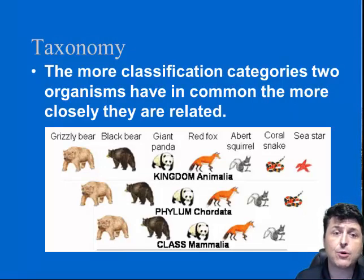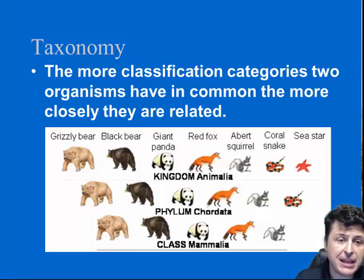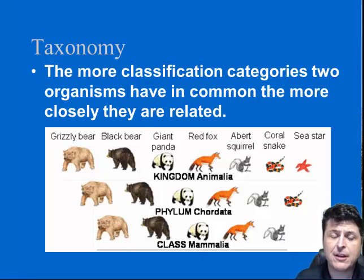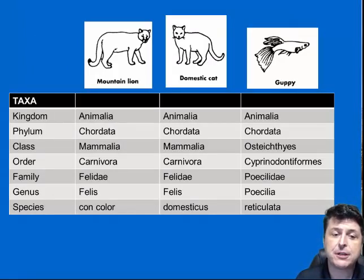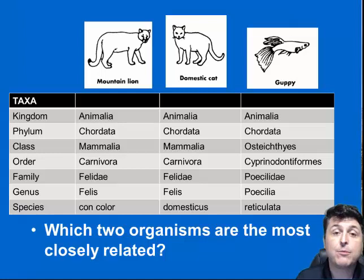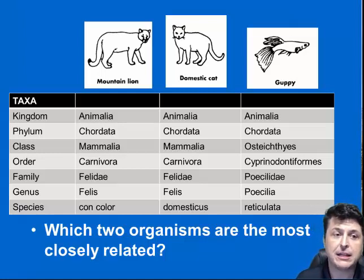The more classification categories that two organisms have in common, the more related they're going to be. Anything in the class Mammalia is going to be more related to one another than just any old animal, because they have more characteristics in common. You might see a chart showing the classification of various organisms broken out by their groups, and the ones that have more groups in common will be more closely related.